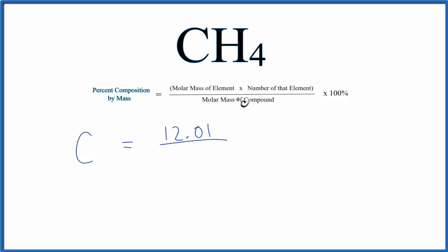Then we'll divide that by the molar mass of the compound, CH4. If you add up the carbon plus four hydrogens, you get a molar mass of 16.05, and the units are grams per mole. So we'll put that on the bottom, we'll multiply by 100, and we'll get the percent composition of carbon in CH4 to be 74.83%.